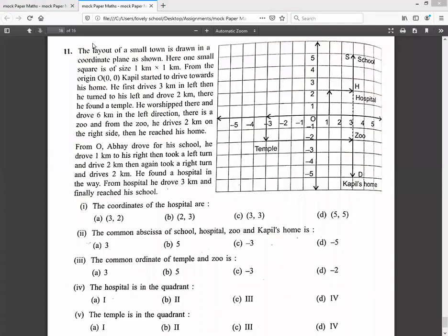Good afternoon everyone. Let's discuss a case study based question from Chapter 3: Coordinate Geometry. The layout of a small town is drawn on a coordinate plane as shown here. One small square is of size one kilometer by one kilometer.